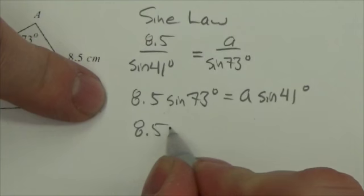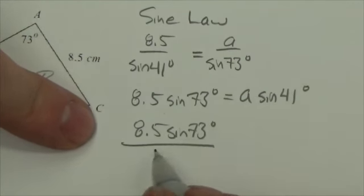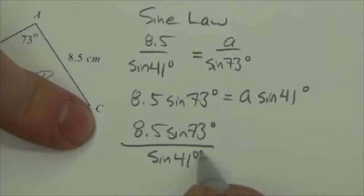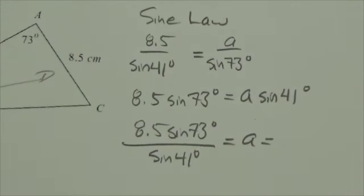And now to isolate the a value I would divide by the sine of 41 degrees. So 8.5 times the sine of 73 degrees over the sine of 41 degrees is going to equal a. And now I just go to my calculator and evaluate that. So 8.5 times the sine of 73 degrees. Make sure you close your brackets after the 73.